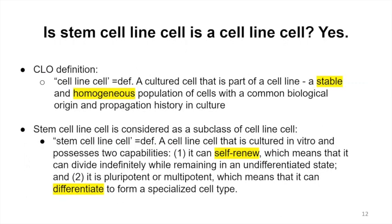I want to introduce the stem cell work. In our 2014 version, we did not include stem cell lines because we were unsure whether a stem cell qualifies as a cell line — the cell line definition is a stable and homogeneous population of cells. After discussion over a couple of years, the community agreed that a stem cell line cell is still classified as a cell line cell, because it does have the required features under given conditions — it can also differentiate or self-renew. So we agreed that a stem cell line cell is a cell line cell.